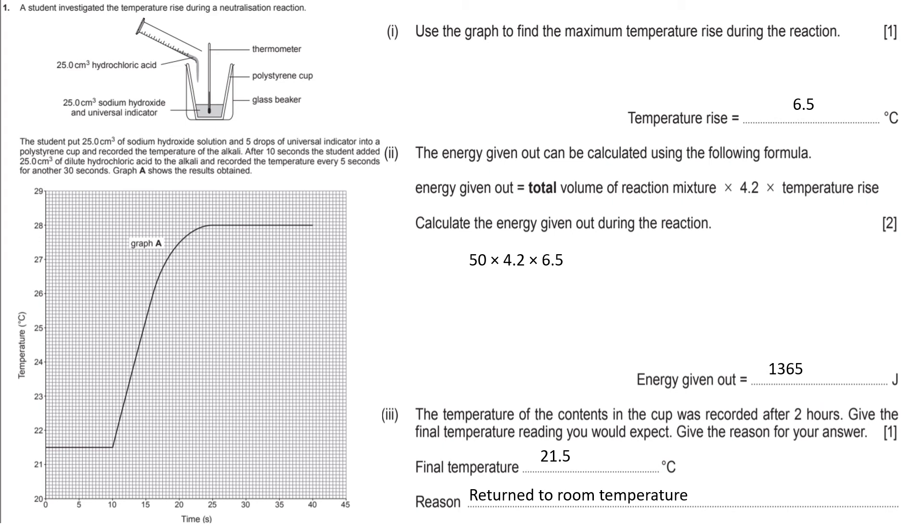the student added 25 cm³ of dilute hydrochloric acid to the alkali, and recorded the temperature every 5 seconds, for another 30 seconds. Graph A shows the results obtained.